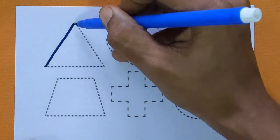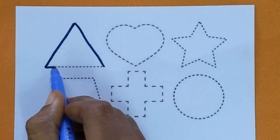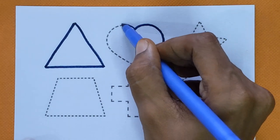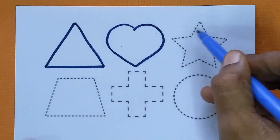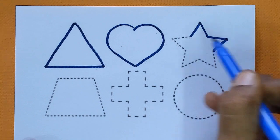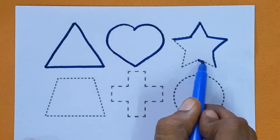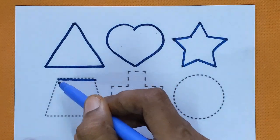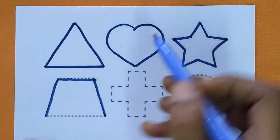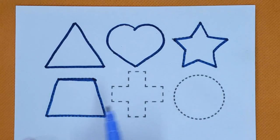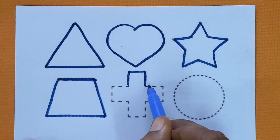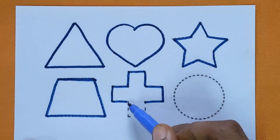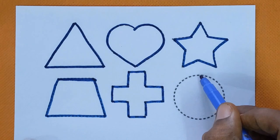Let's see these. Triangle shape, heart, star, trapezoid, cross, and circle.